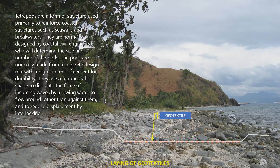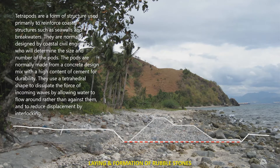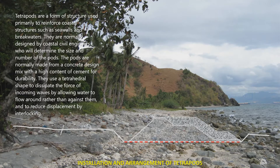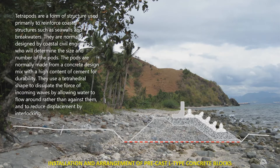Tetrapods are a form of structure used primarily to reinforce coastal structures such as seawalls and breakwaters. They are normally designed by coastal civil engineers who will determine the size and number of the pods. The pods are normally made from a concrete design mix with a high content of cement for durability. They use a tetrahedral shape to dissipate the force of incoming waves by allowing water to flow around rather than against them, and to reduce displacement by interlocking.